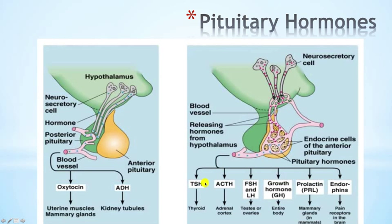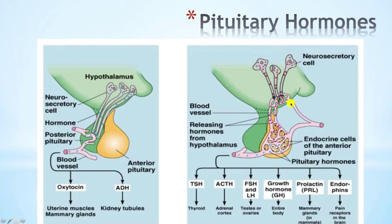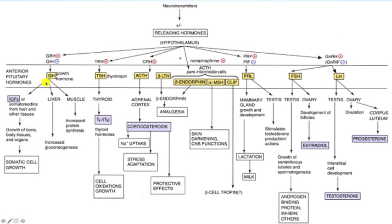The basophils produced TSH, ACTH, FSH, and LH. When talking about the portal circulation, it must be emphasized that it's not exclusive to the hypothalamus or the pituitary gland. We have portal circulation in different places around the body — another good example would be the portal circulation found in the liver. Now let's talk in detail about what these hormones actually do.